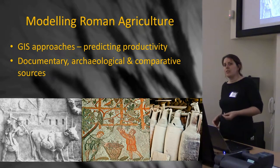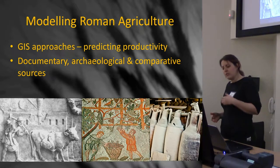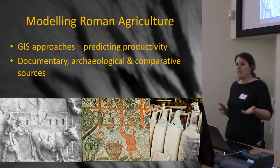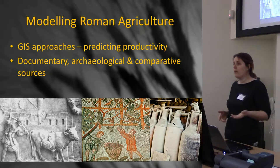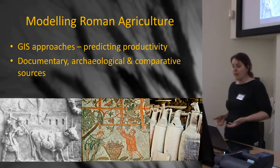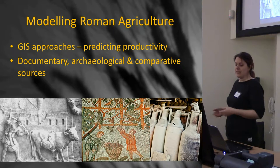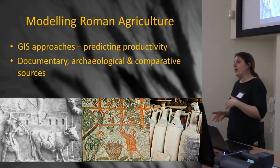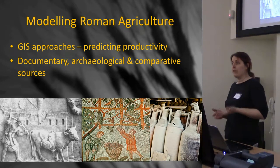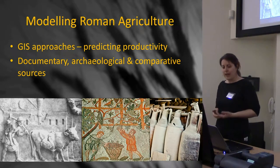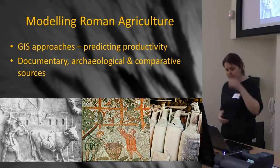What I was trying to do was integrate documentary sources at the time — things like Cato, Varro, Columella, what the Roman agronomists were saying about agriculture — and integrating it with archaeological and comparative sources to see if what they were saying was really the case, how that would impact settlement and agricultural production.